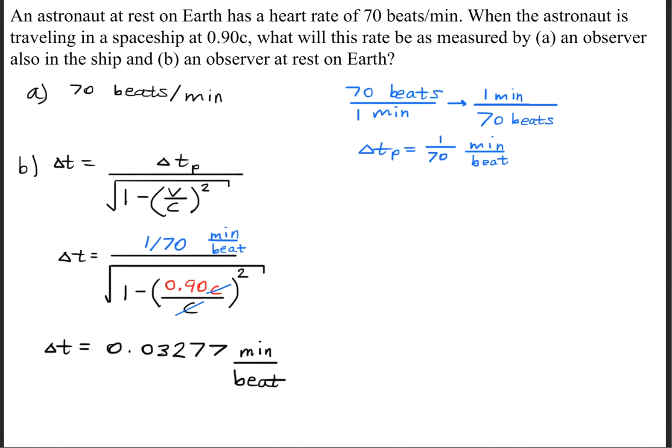When we simplify that, notice you can cancel out the speed of light constant. Then when you find the numerical value, you'll get 0.03277 minutes per beat.